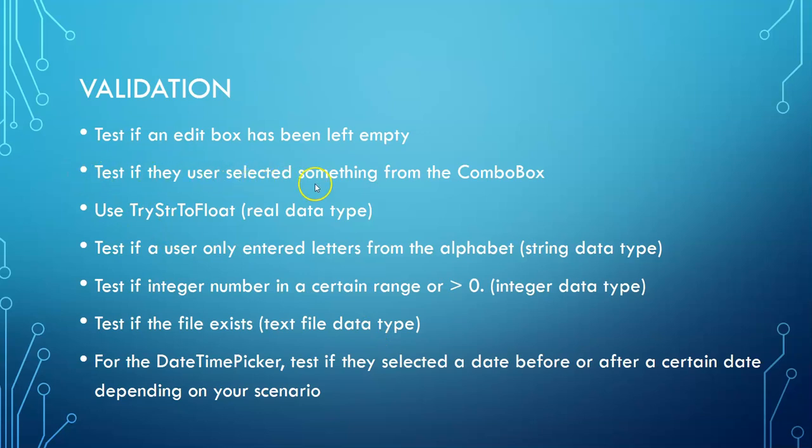Second one is to test if something was selected. You can use your combo box dot item index to test if that's less than zero. That means the person didn't select from the combo box.